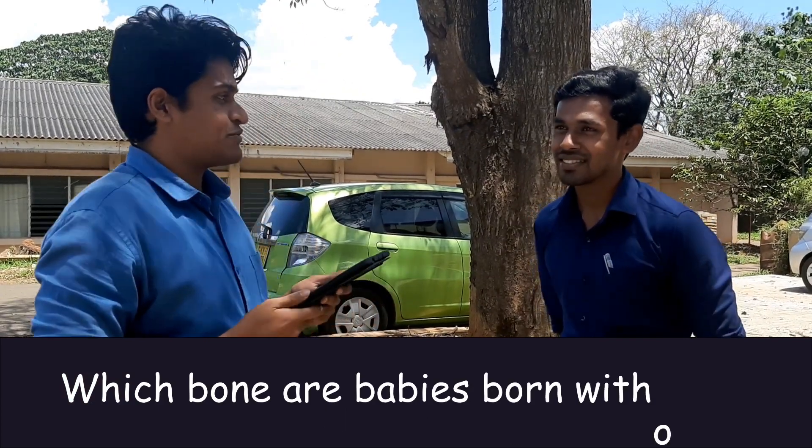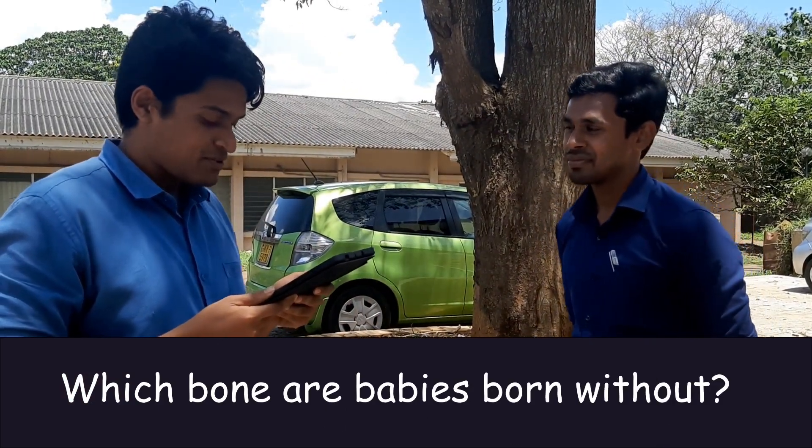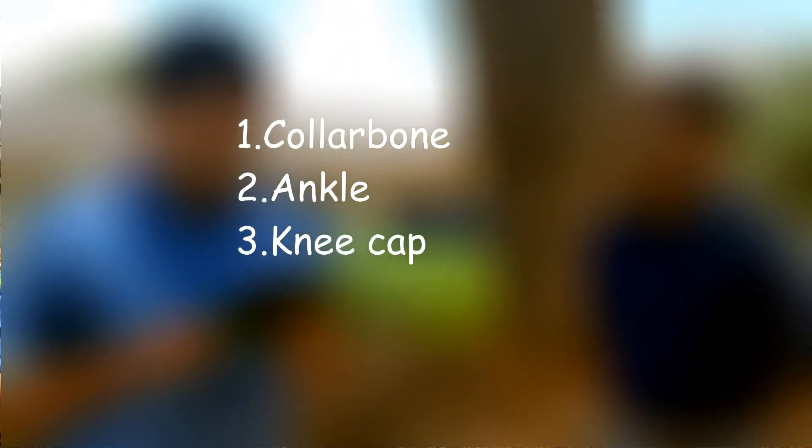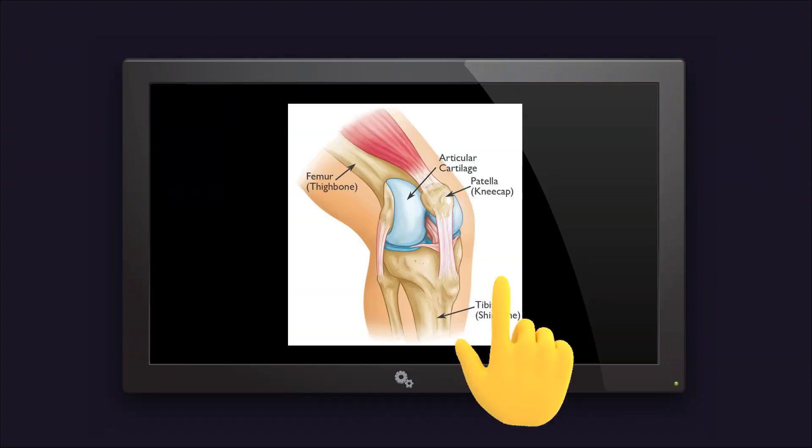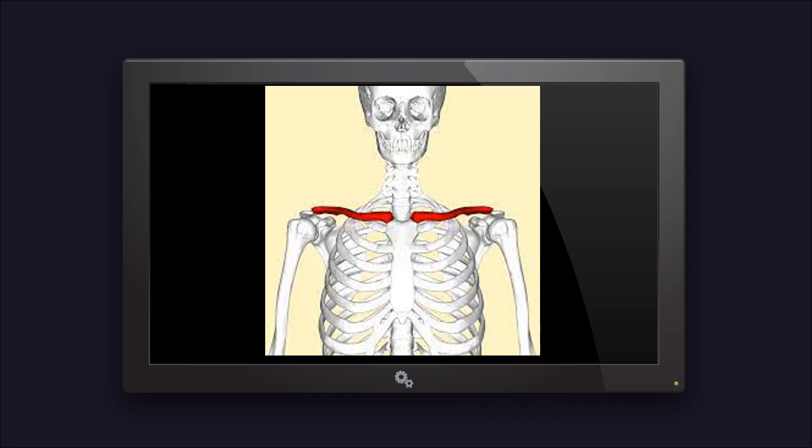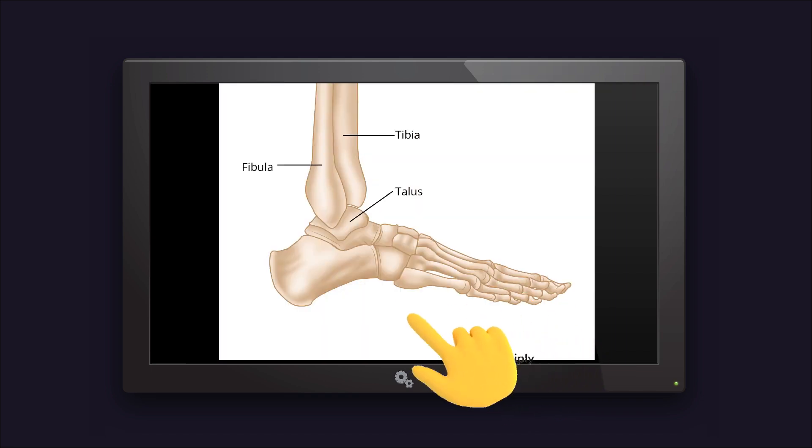Which bone does a baby not have? The options are the collarbone, ankle, and kneecap. We don't have the bone in the middle — we don't have the kneecap. We don't have the collarbone in the middle. We don't have the kneecap. The final answer is the kneecap.